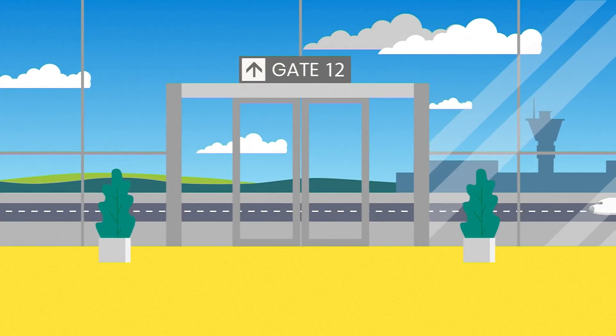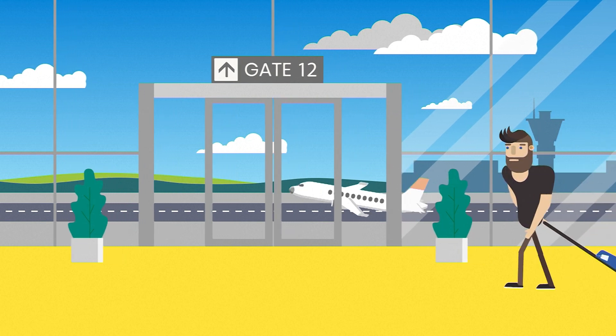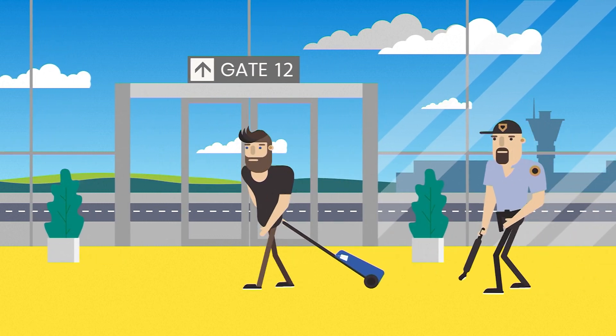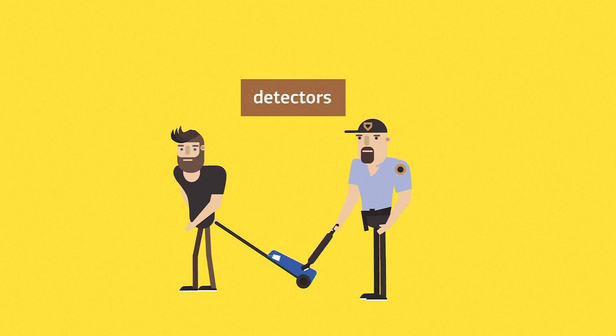But how are explosives currently detected? Two common methods for detecting explosives at airports are electronic trace detectors and trained detection dogs.